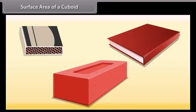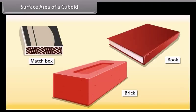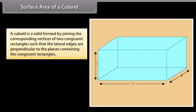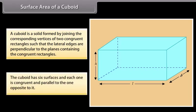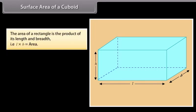Students, look at these things: a book, a matchbox, a brick — all these are examples of a cuboid. A cuboid is a solid formed by joining the corresponding vertices of two congruent rectangles such that the lateral edges are perpendicular to the planes containing the congruent rectangles. We can see that the cuboid has six surfaces, and each one is congruent and parallel to the one opposite to it.